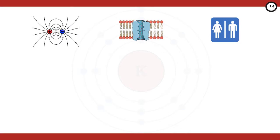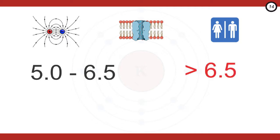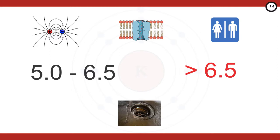This brings us to the end of hyperkalemia. Remember the three core principles: stabilizing, shifting, and eliminating. Remember the immediate indications to stabilize and shift — potassium between 5 and 6.5 with ECG changes, and all potassium values over 6.5. And remember how to throw that kitchen sink in the setting of cardiac arrest. Thank you all for listening and see you again next time.